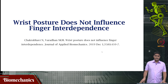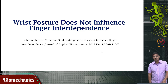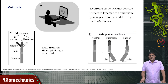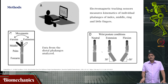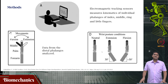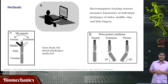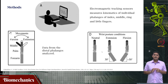What was the experimental approach used? We placed electromagnetic tracking sensors to measure kinematics of individual phalanges of the index finger, middle finger, ring finger, and little finger. There are 3 phalanges in each finger and we used 4 fingers, so 12 different electromagnetic tracking sensors were placed using velcro and surgical tape. These are really small sensors — their diameter is 1.8 mm — small enough to be fixed to a finger.